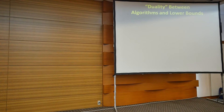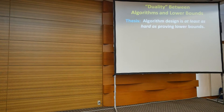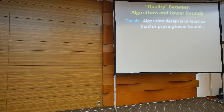This talk is about some optimism in complexity theory. It's about a particular duality — in quotes — between algorithms and lower bounds. Duality in quotes because there's no generic connection being established, only in some special cases. But it may turn out the difference between algorithms and lower bounds is more psychological than anything else. My thesis is that algorithm design, for many particular problems, is at least as hard as proving lower bounds. If this thesis is true, it's very good news, because we think we understand algorithm design very well, whereas we're far from proving lower bounds.